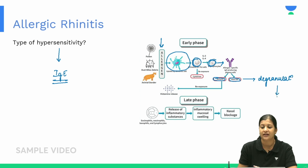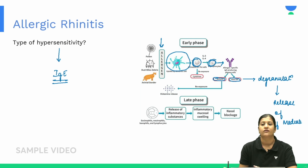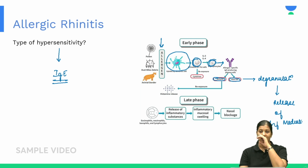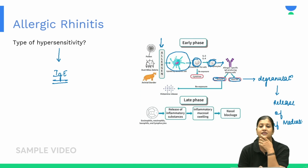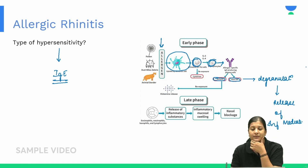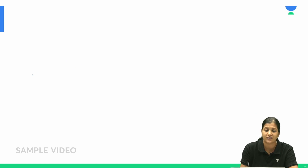When degranulation of mast cells occurs, there is release of inflammatory mediators, and the release of these inflammatory mediators causes symptoms. Let me draw and summarize what we've discussed so far.